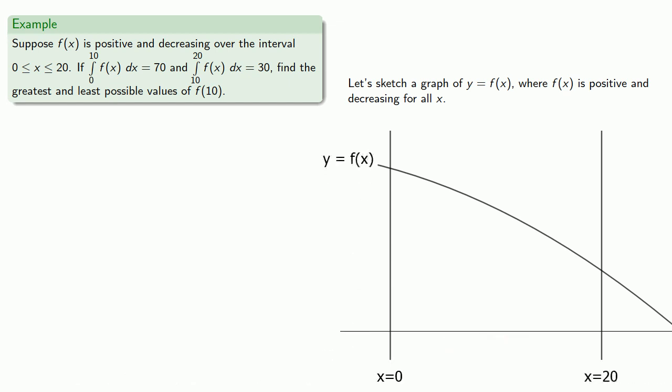So this first integral from 0 to 10, well, that's the area under the graph over the interval 0 to 10. We know that's 70. Let's go ahead and draw that area in and label.